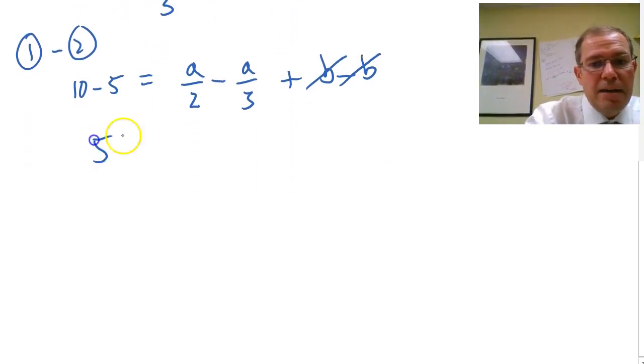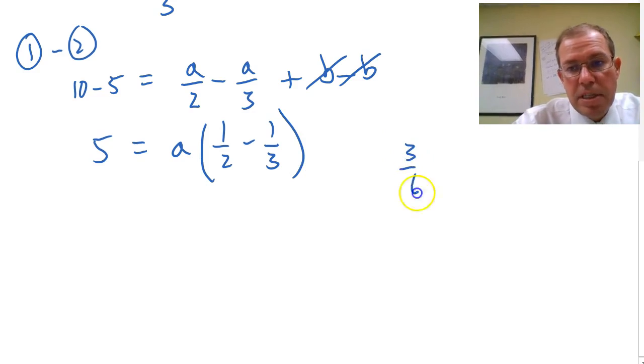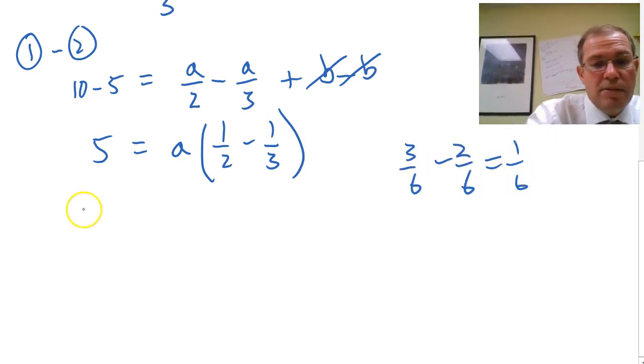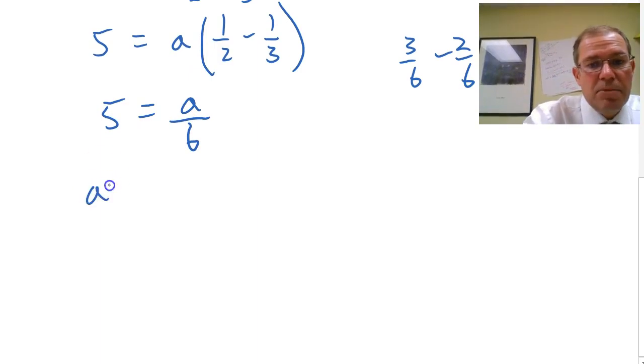So now let's move on. So I've got 5 equals, let's factor an a out here. I've got a half minus a third, which is obviously 1 sixth, because a half is 3 sixths, and a third is 2 sixths. So I've got 1 sixth there. So I've got 5 equals 1 sixth of a, or a over 6. And then a must be, just multiplying both sides by 6, a must be 30.